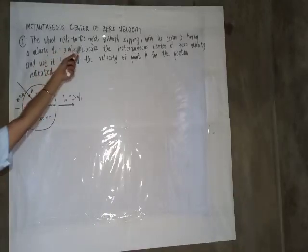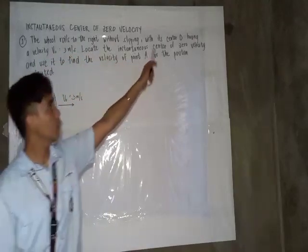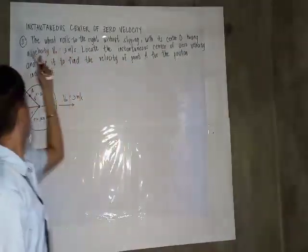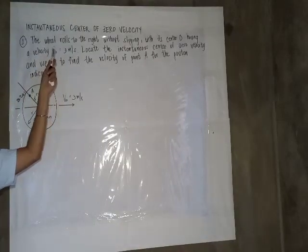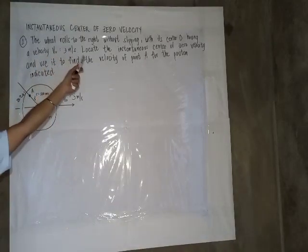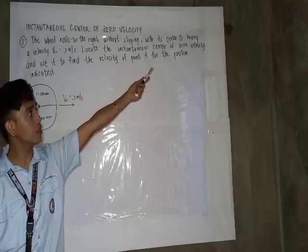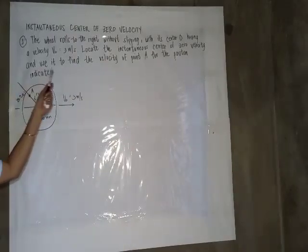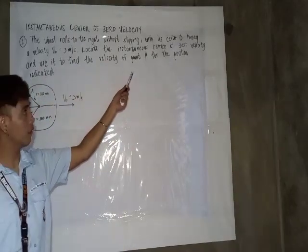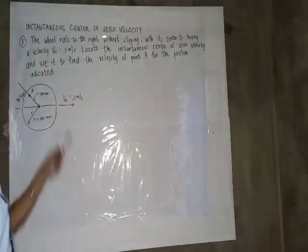So for example 1, we have the wheel rose to the right without slipping. With its center O having a velocity or initial velocity equal to 3 meters per second, locate the instantaneous center of zero velocity and use it to find the velocity of point A for the position indicated.